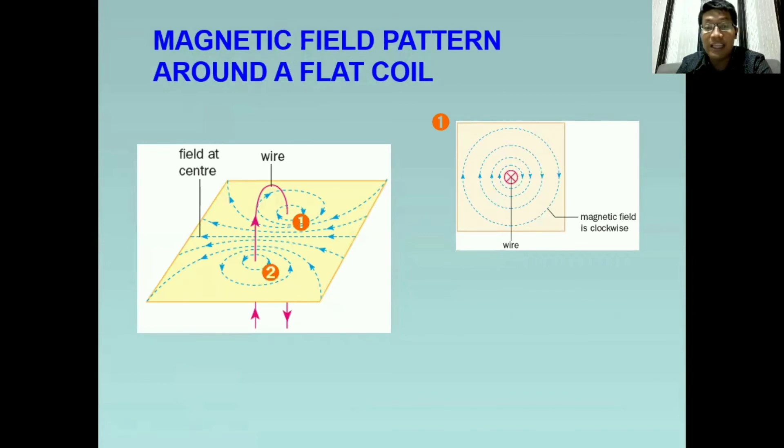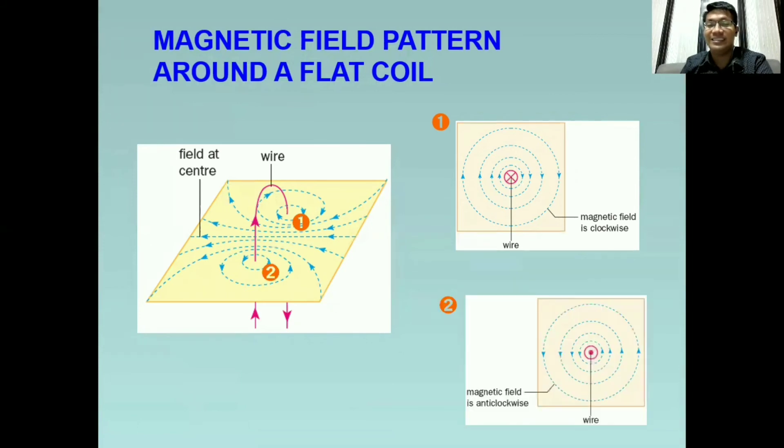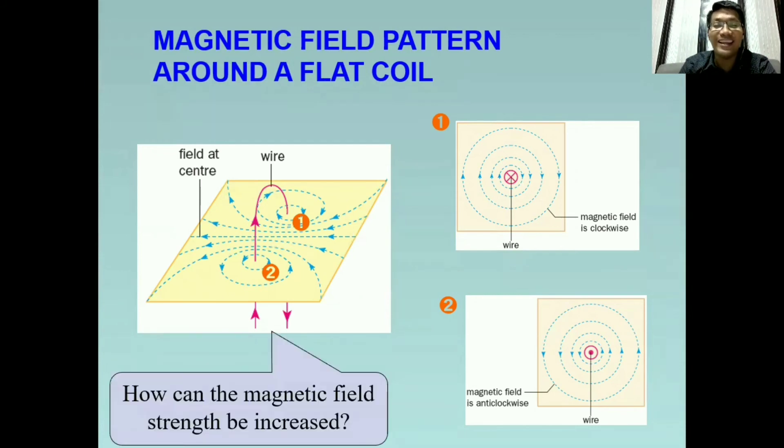Now on the other side, opposite naman, the current is pointing towards you. And as you see, it is now moving or the magnetic field is counter clockwise or anti clockwise. So therefore, in a flat coil, we have opposite sides. And their magnetic fields are also opposite.